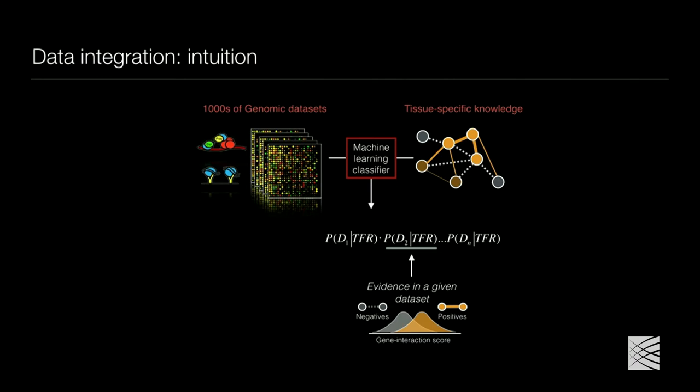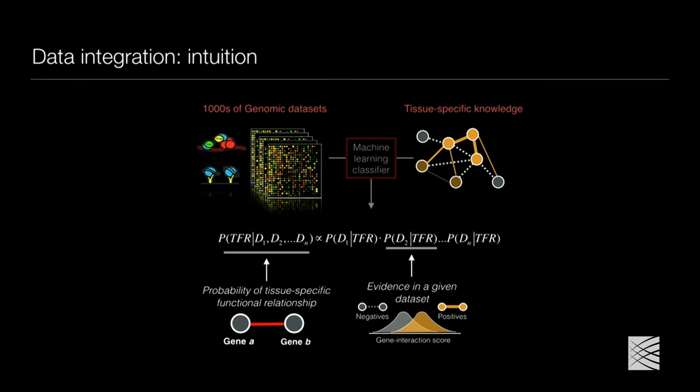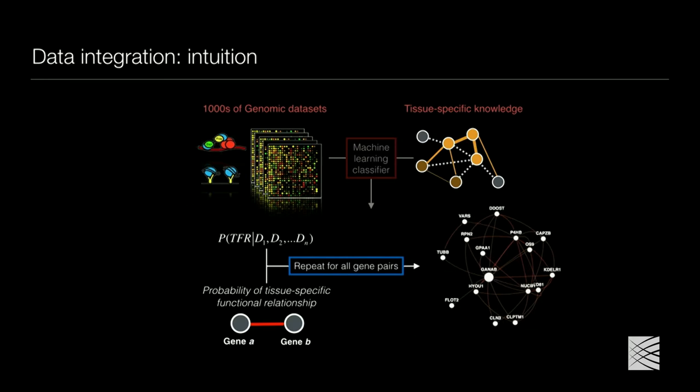For each data set we have positive and negative examples of tissue-specific functional relationships (TFR), and the likelihood of observing this evidence in each data set can be learned based on our gold standard, then used to calculate a posterior probability of tissue-specific functional relationship. We do this for every pair of genes and then estimate a network.